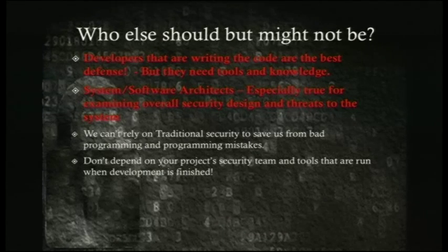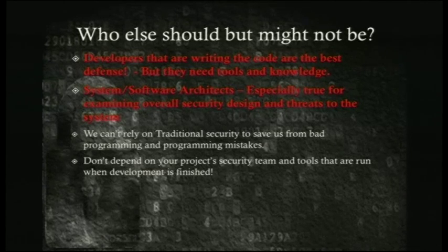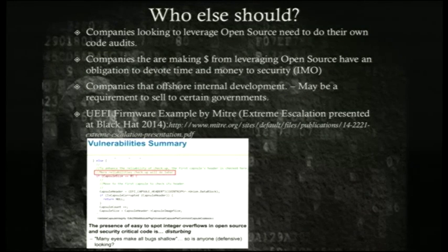Developers writing code are really the best defense, but if they don't have the knowledge and the tools, they're going to miss things. You need a system architect that really knows security, because tools will find bugs in code but they'll miss overall architecture flaws. Don't depend solely on your project security team — take initiative as a developer to make sure your code is secure. Companies have an obligation: if they're using open source in their products or making money from it, they should try to improve its security and enforce some security standards. If you're offshoring development, those developers might not be up to date on security, so you definitely want to be reviewing that code.